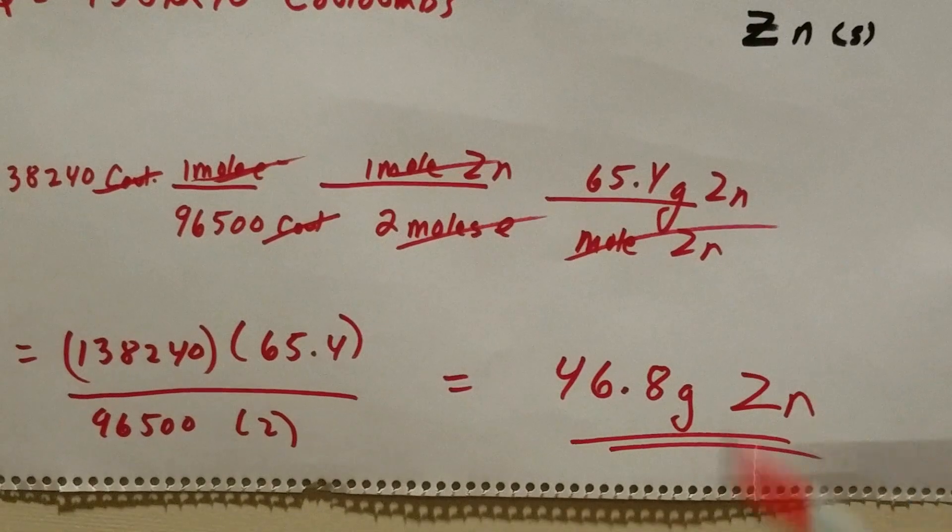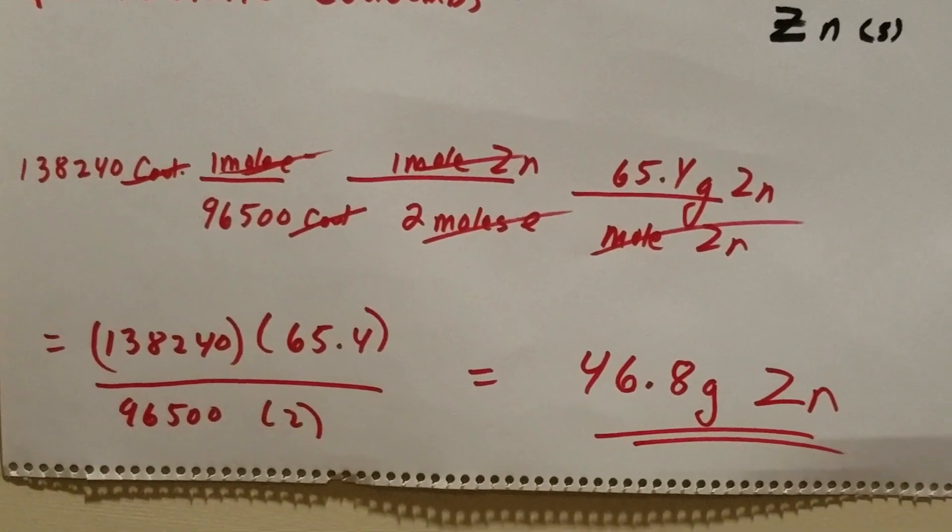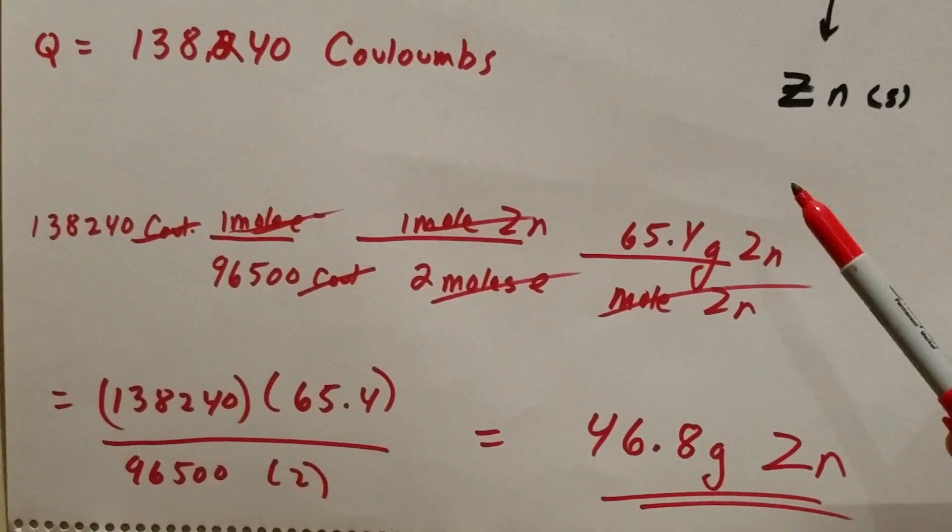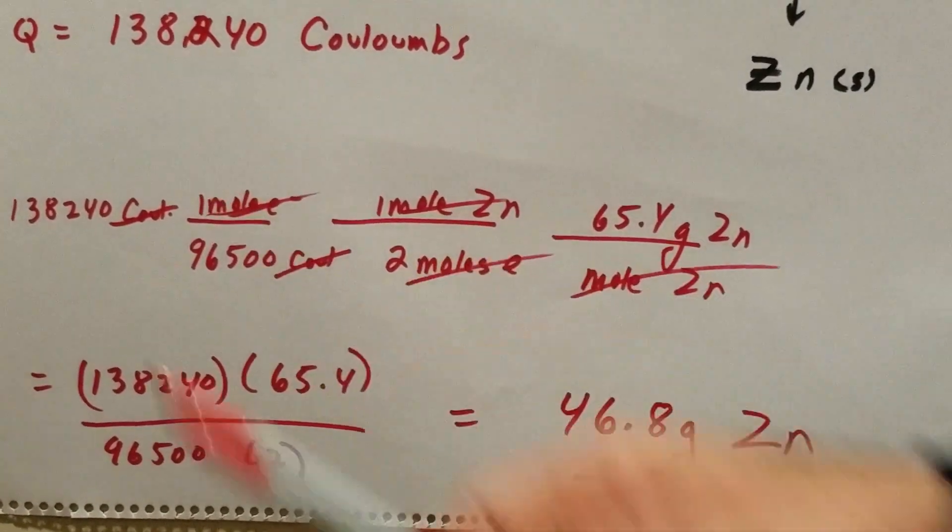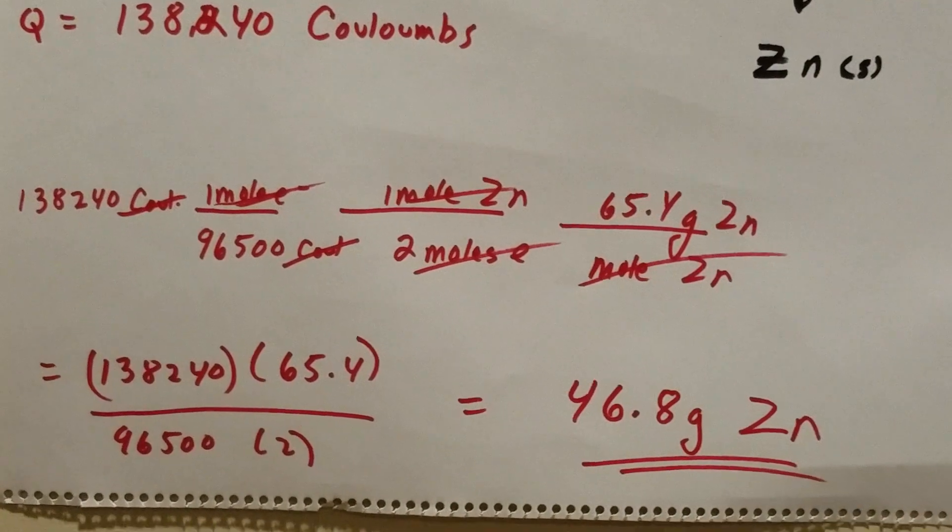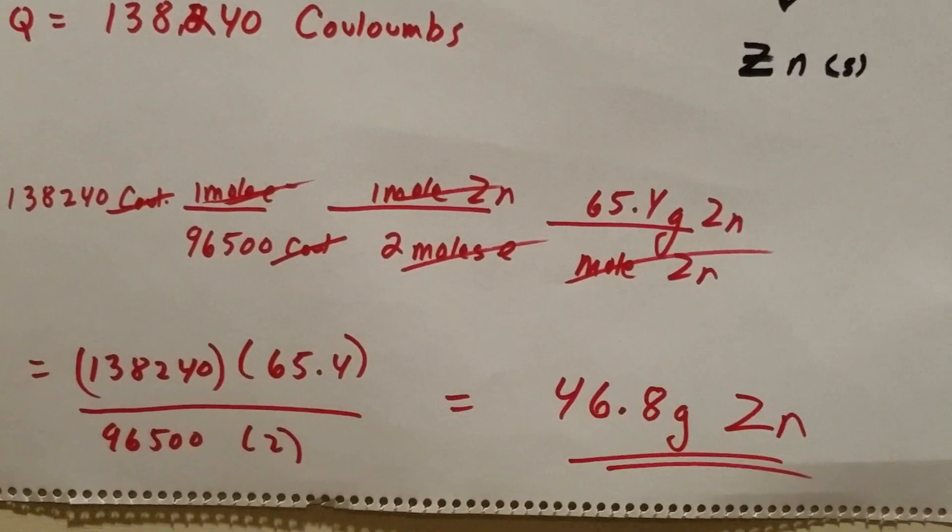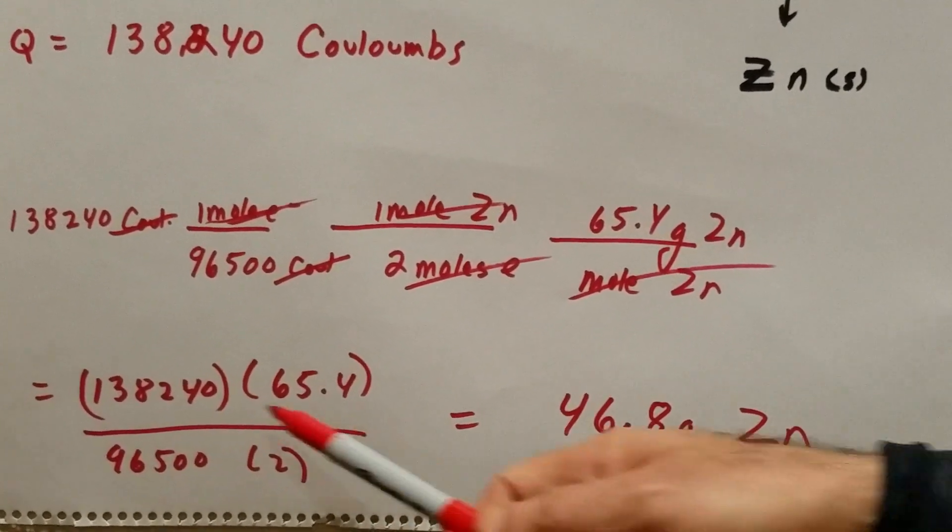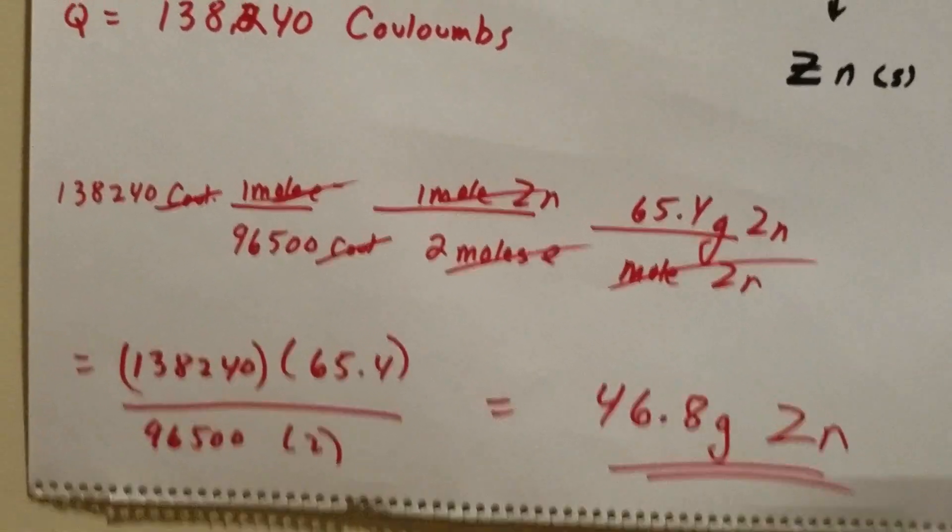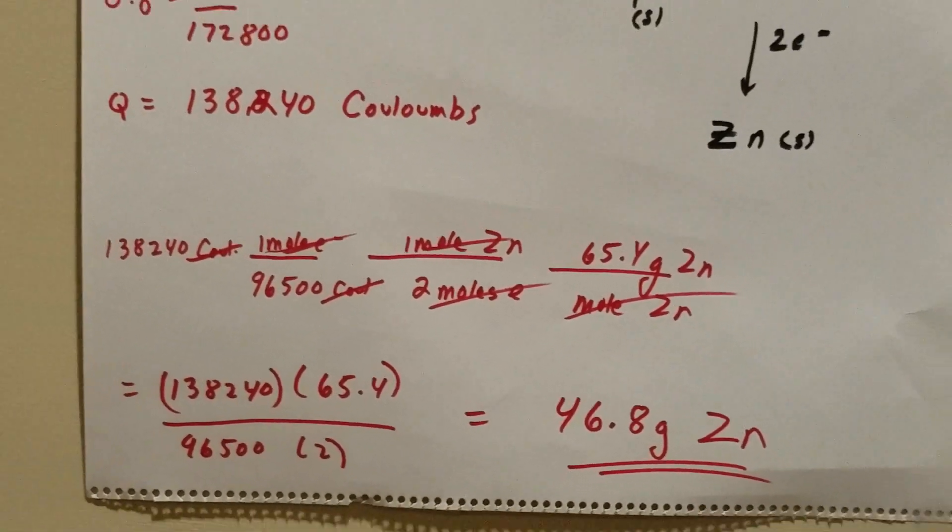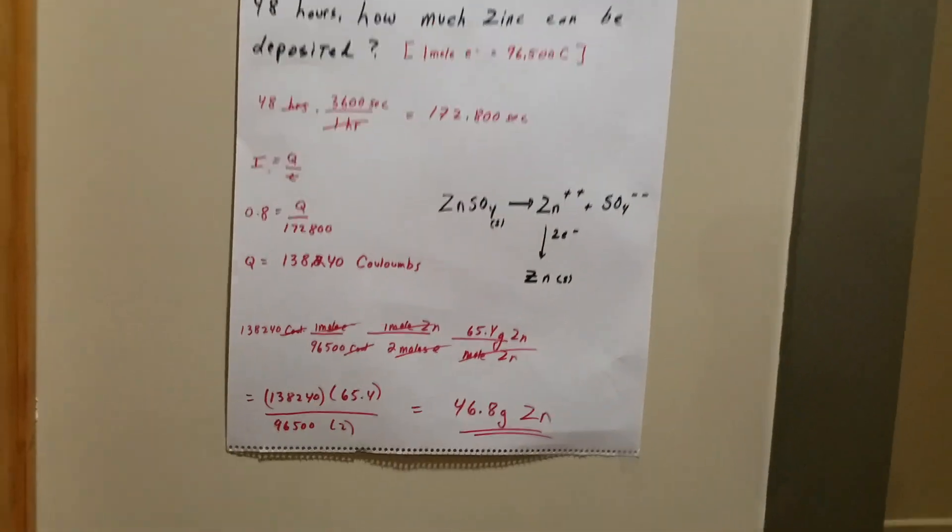You multiply it by the grams of zinc in a mole. There's 65.4 grams of zinc in a mole. So I'm going to multiply 138,240 by 65.4 divided by 96,500 over 2. I realize the numbers aren't so nice, but make sure you know how to do this problem. We got 46.8 grams of zinc.